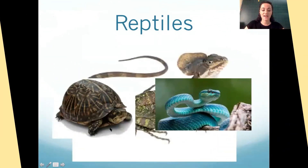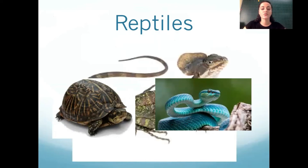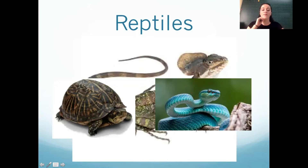Reptiles — as you can see — some have four legs, some have no legs. Their skin is dry and scaly. See how it looks like they have scales? It's dry and scaly instead of wet like an amphibian.